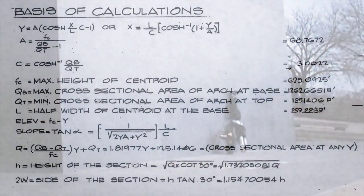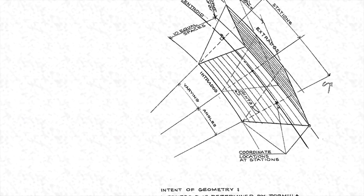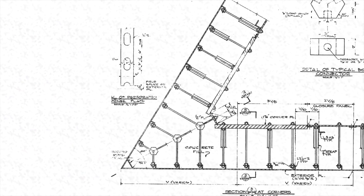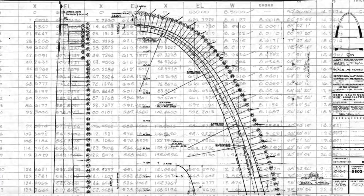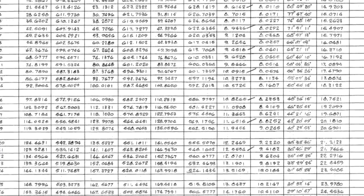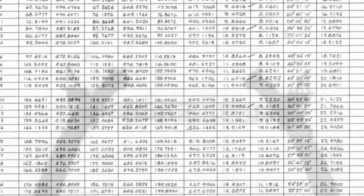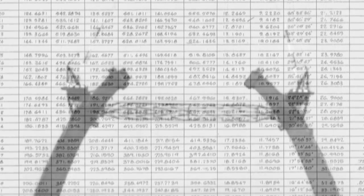So the architects and engineers took the mathematicians' equations and made drawings and great columns of numbers and took them to the steel makers and the construction crews.